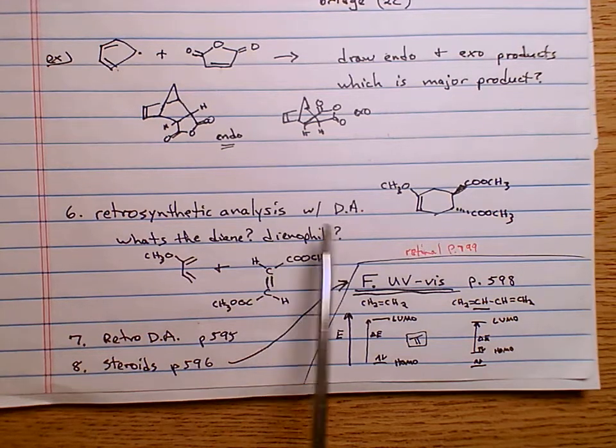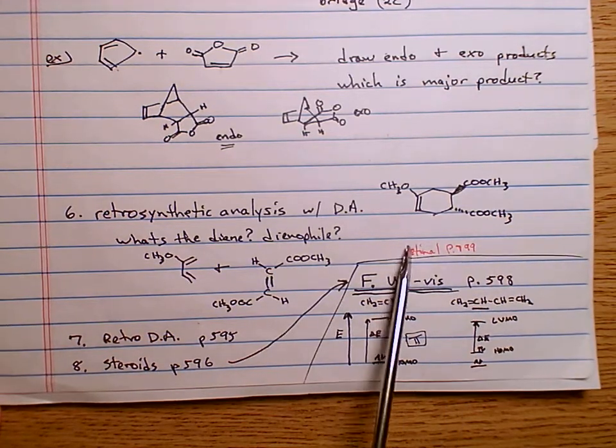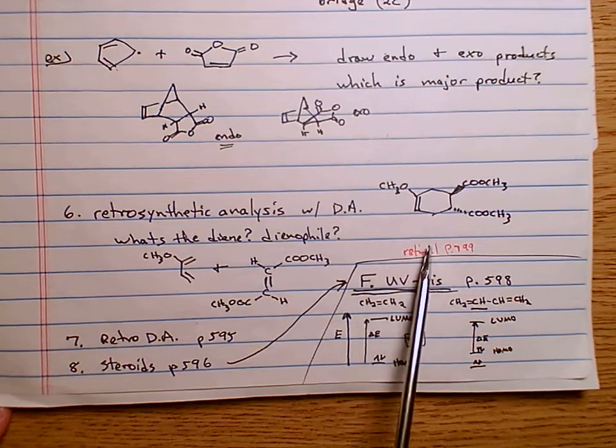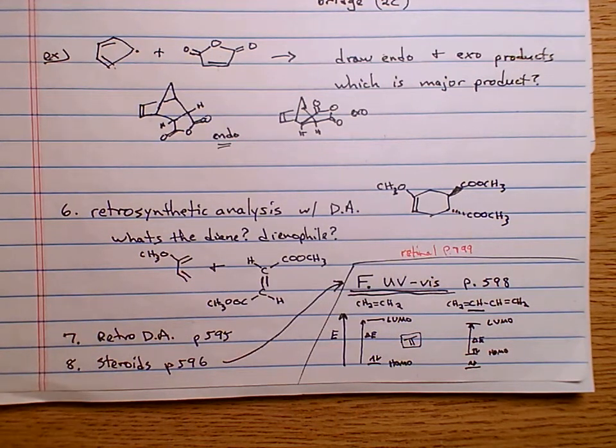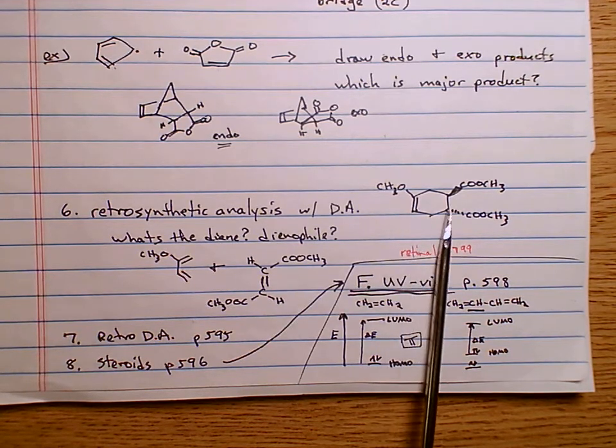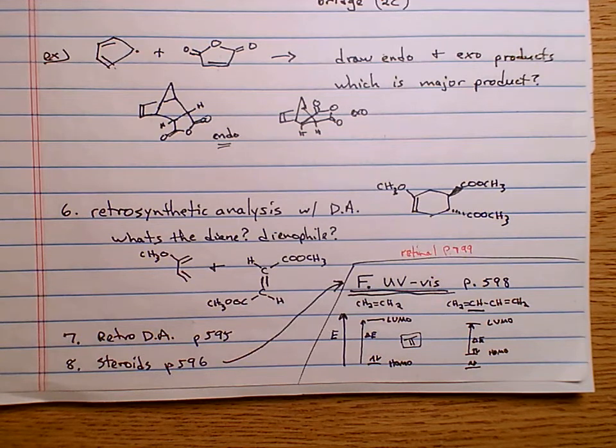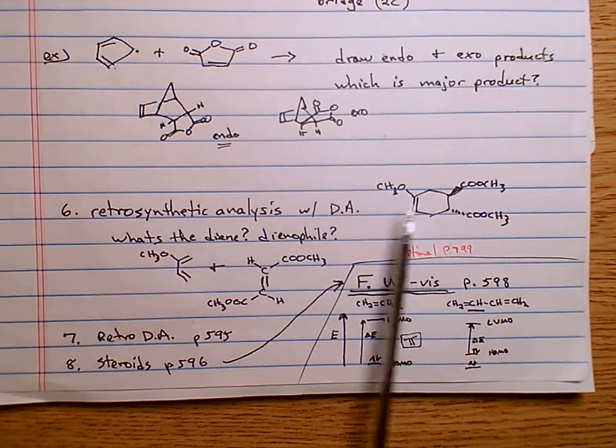For example, say you wanted to make this. This is what you wanted to make. And you're looking at this, so how do you make that? What reagents do you add together to make this thing? Well, the first thing you can say is, okay, well, oh, wait a minute here. I see something. I see a cyclohexene ring. I know how to make cyclohexenes. How do I make cyclohexenes? With a Diels-Alder reaction.